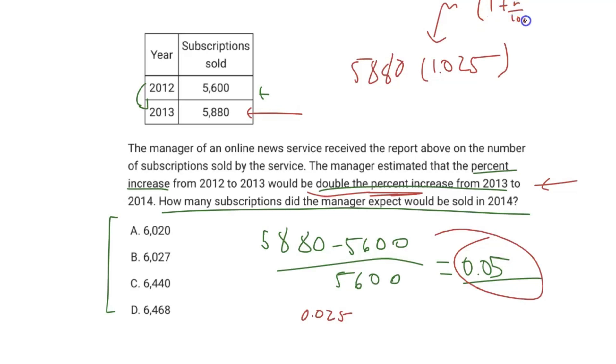Just so you never get it wrong, there's a formula: 1 plus r over 100, where r is your percent. In our case it would be 2.5, so 1 plus 2.5 over 100 is indeed 1.025. That's a nice trick to never get those percent increase questions wrong.